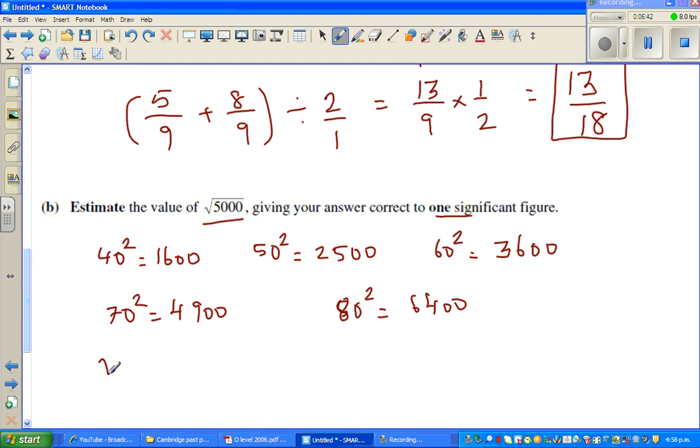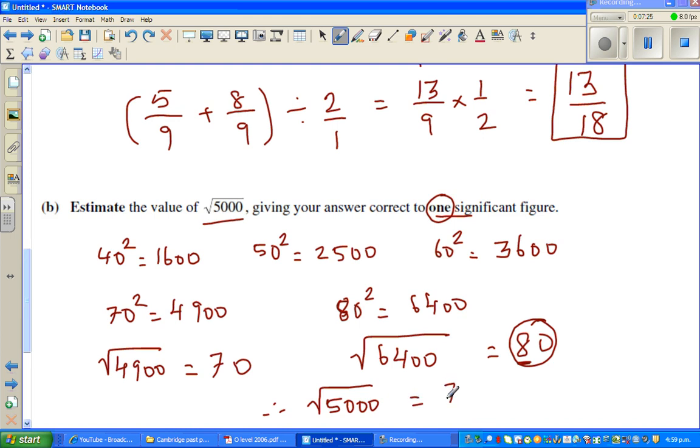Square root of 4900, square root is the opposite of square, it's 70. Square root of 6400 is 80. You want to write in only one significant figure. 5000 is very close to 4900. Therefore I can say square root of 5000 in one significant figure is 70.